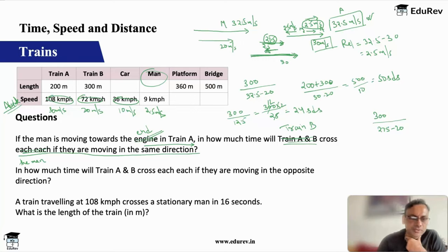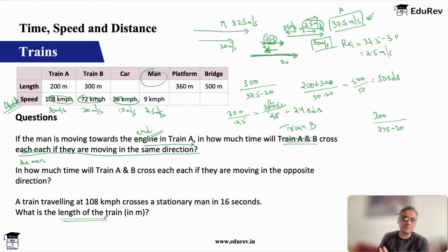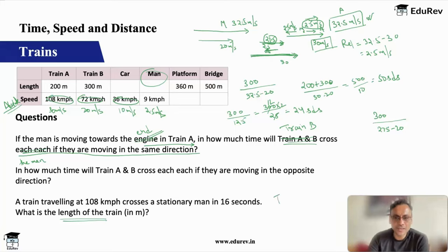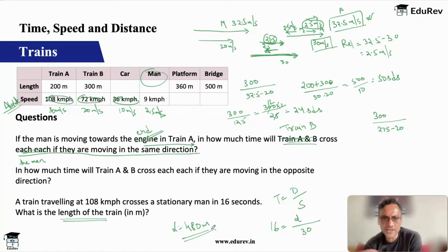The next question: a train travelling at 108 km/h crosses a stationary man in 16 seconds — find the length of the train. We know time = distance ÷ speed. Time is 16 seconds, speed is 108 km/h = 30 m/s. Since the man is stationary and has negligible length, distance equals the length of the train. So length = 30 × 16 = 480 meters. This shows that any two of the three variables — time, distance, speed — can be used to find the third.